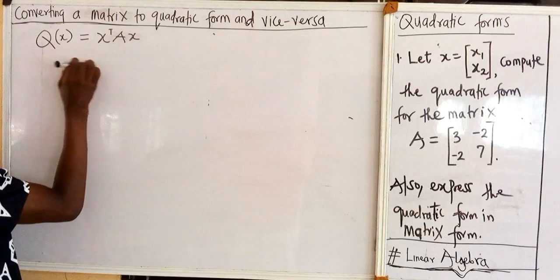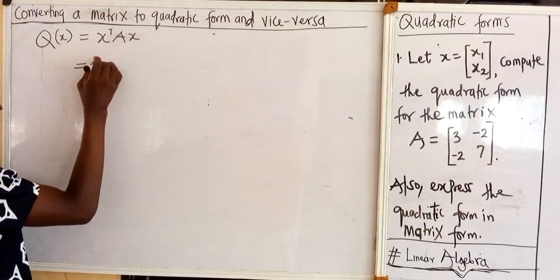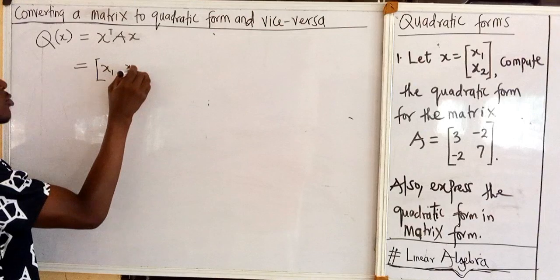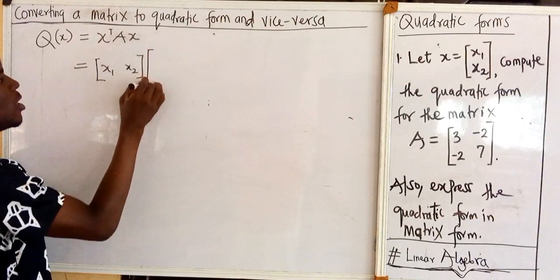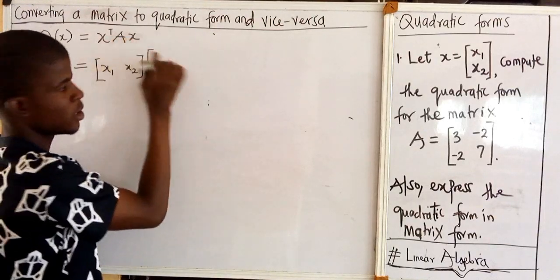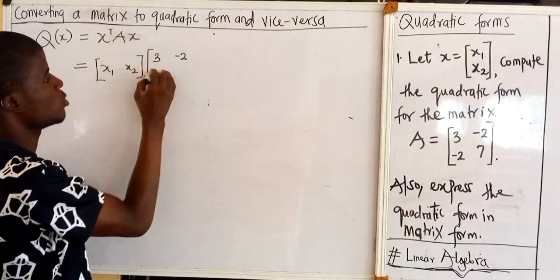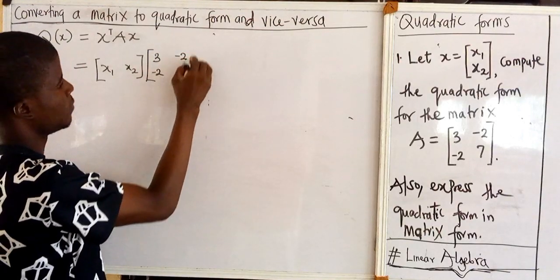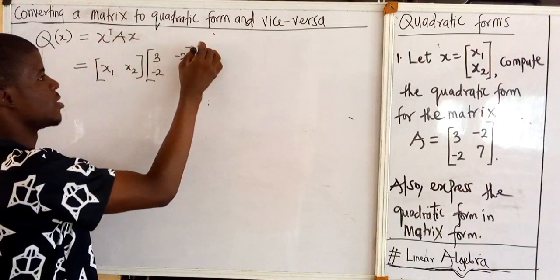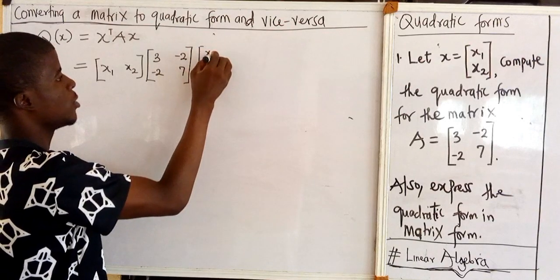Q of x is equal to x transpose, like I just showed you, is the matrix x1, x2 times the matrix of the quadratic form. That is 3 minus 2, minus 2, 7 times x itself. That is x1, x2.